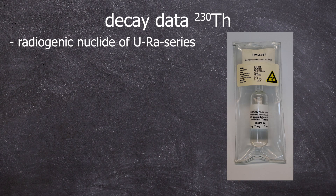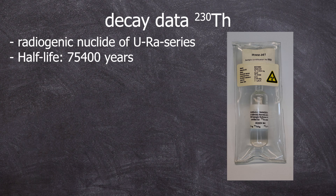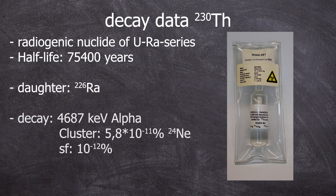Thorium-230 is a radiogenic radionuclide. It's not primordial, but still occurs naturally. It is part of the uranium-radium series. Its half-life is 75,400 years. It decays into radium-226, but also undergoes cluster emission of neon-24, with a probability of 5.8 times 10 to the power of minus 11%, and spontaneous fission has also been observed. The most common alpha energy is the 4,687 kiloelectron volt line.